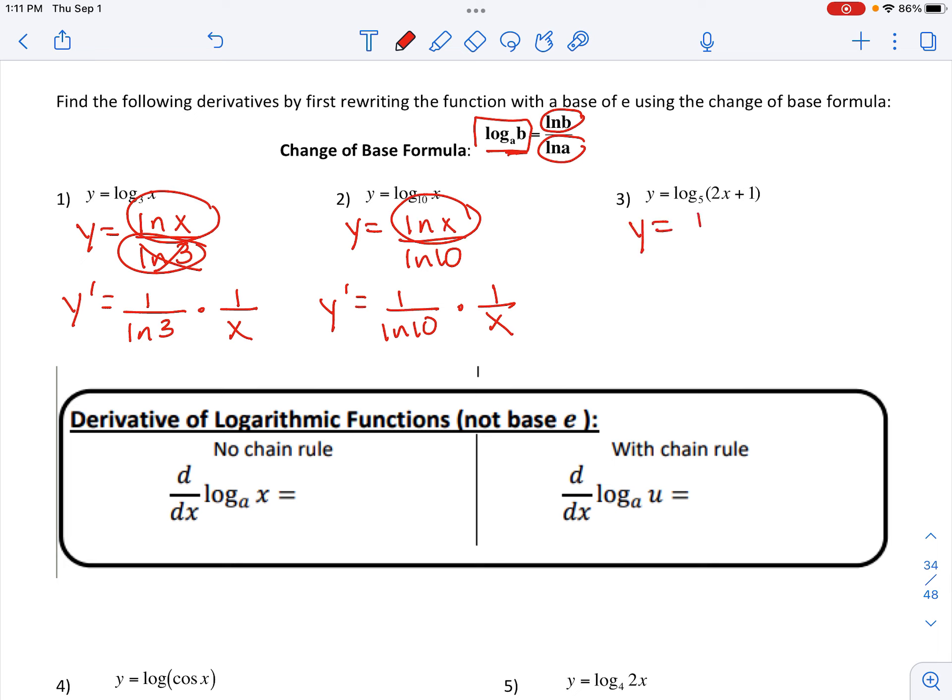Same thing here. Rewrite it using change of base. So pull out that 1 over natural log of 5, and then we need to take the derivative of natural log of 2x plus 1, which is going to be 1 over 2x plus 1. But then notice you do need to use the chain rule here.